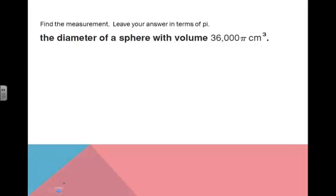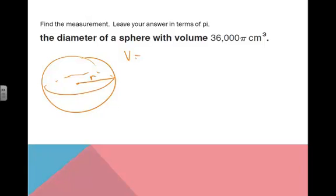We're going to try a couple of example problems. We're going to find the measurement and leave our answer in terms of pi. We need to find the diameter of a sphere that has a volume of 36,000π cubic centimeters. We know that volume is 4/3πr³. So they told us the volume was 36,000π.